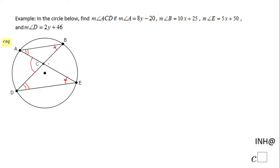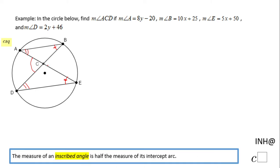Angles A and D are marked the same, and angles B and E are marked the same, because these two angle pairs are congruent. They are inscribed angles that share the same intercepted arc. Angle A and angle D share the same intercepted arc, so angle A is congruent to angle D.